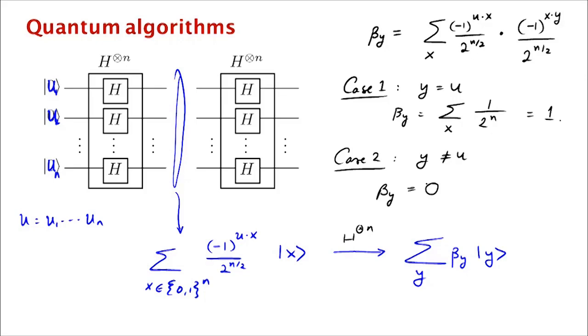Right, so this is as though you had 2 to the n virtual slits. And as your light goes through these 2 to the n virtual slits, then this Hadamard transform makes them refocus. And what happens? Well, you get completely constructive interference at y equal to u and destructive interference everywhere else. Of course, you can see this by just observing that the Hadamard transform is its own inverse. And so if you start from u, you apply the Hadamard twice, you get back u.